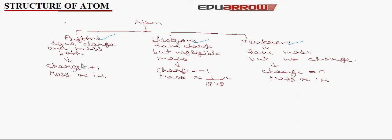On protons, charge equals plus 1 and mass is equivalent to 1 amu. On electrons, charge is equal to minus 1 and mass is equivalent to 1 upon 1848 factor of amu. On neutrons, charge is equal to 0 but mass is equivalent to 1 amu.